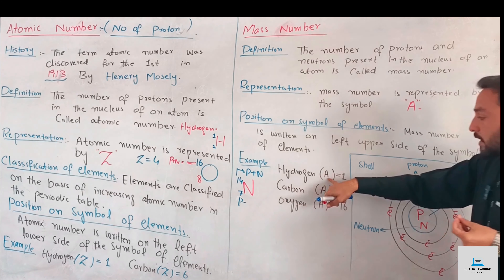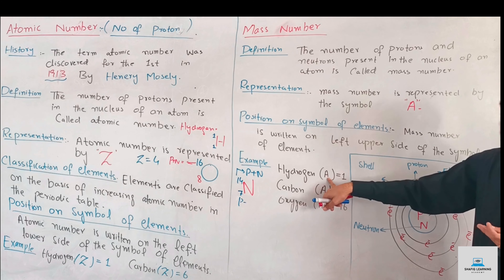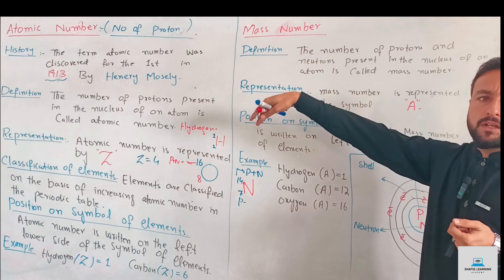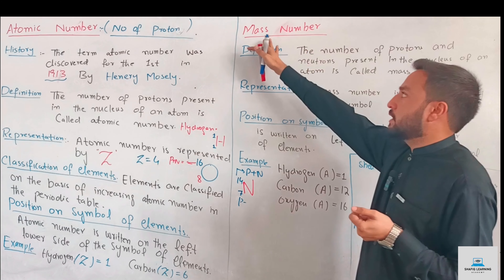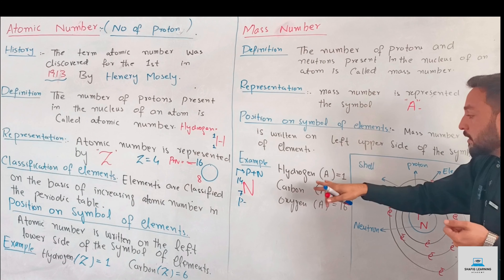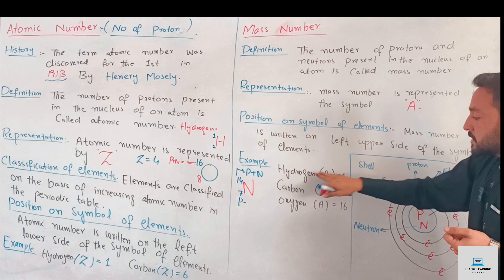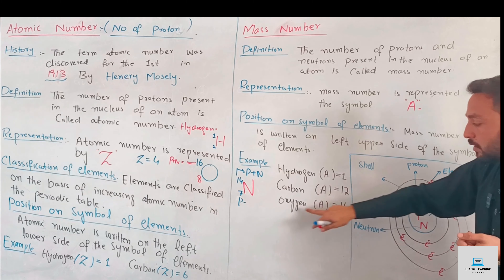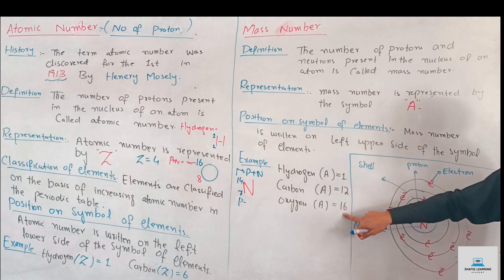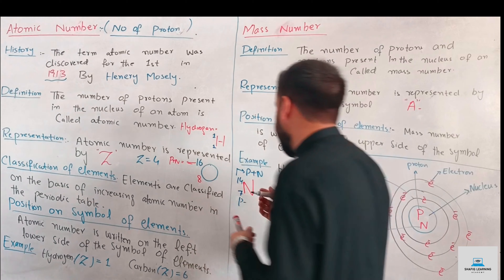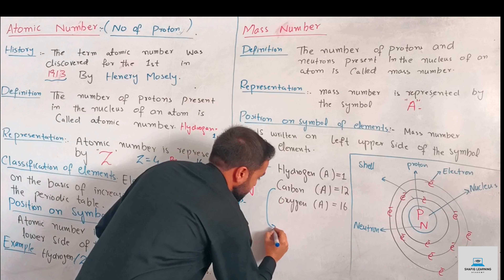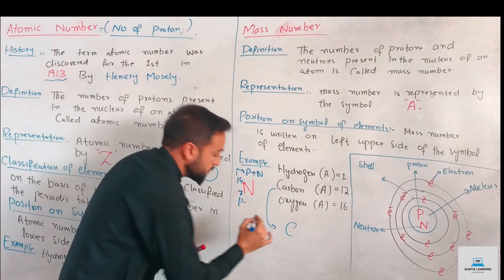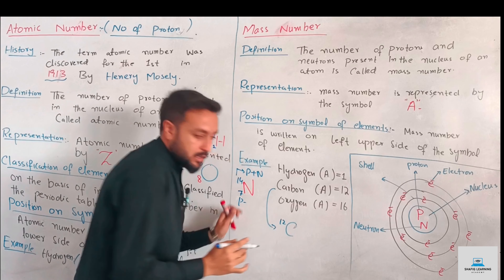Hydrogen has an atomic mass number of 1. There is a difference between atomic mass and mass number. The mass number of carbon is 12 and the mass number of oxygen is 16. The carbon symbol is C, and the mass number is written on the upper left side of the symbol.